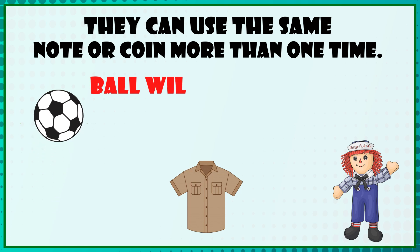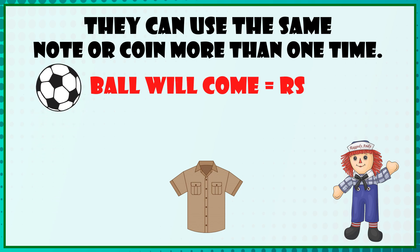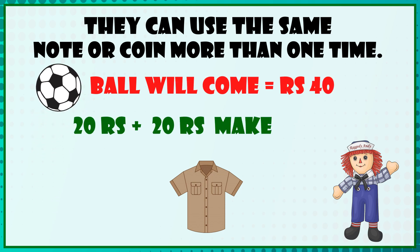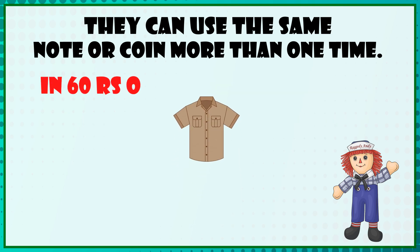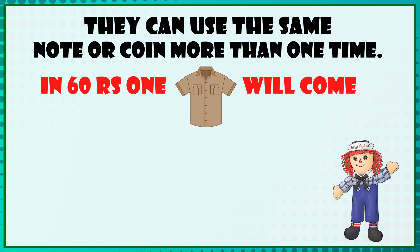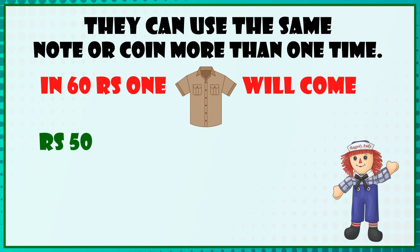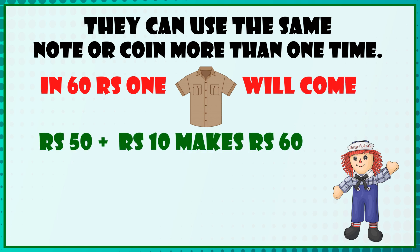The ball costs rupees 40 — 20 plus 20 makes rupees 40. In rupees 60, one shirt can come — rupees 50 plus rupees 10 makes 60 rupees.